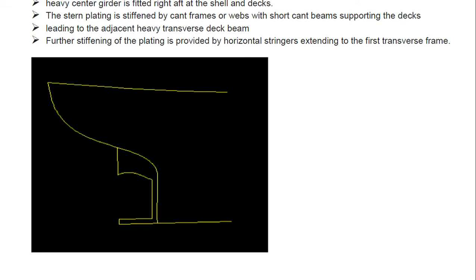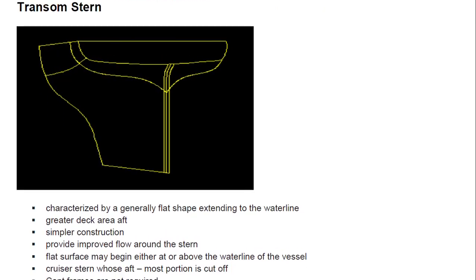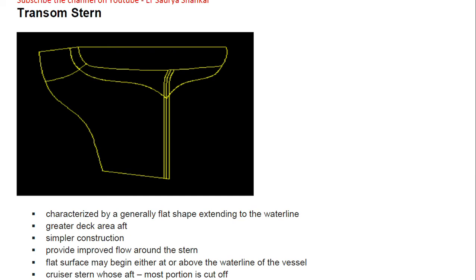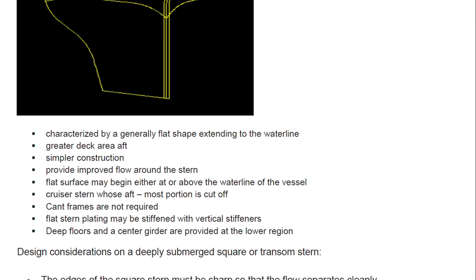The transom stern is characterized by a generally flat shape extending to the water line, with greater deck area aft, simpler construction, and improved flow around the stern. The flat surface may begin either at or above the water line of the vessel — essentially a cruiser stern whose aft-most portion is cut off. Cant frames, which were present in the cruiser stern, are not provided here. Flat stern plating may be stiffened with vertical stiffeners, and deep floors and center girders are provided at the lower region.